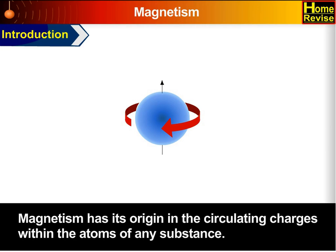Magnetism has its origin in the circulating charges within the atoms of any substance.